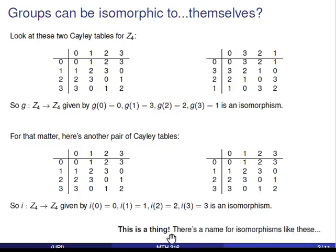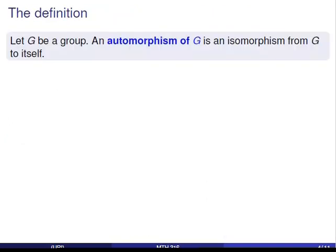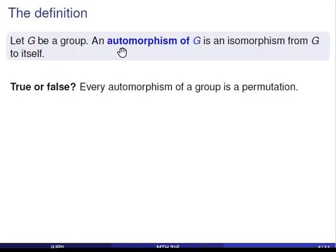It turns out that that's a thing, and that thing is what this video introduces. Our main definition in this video will be that of automorphism. Now as the 'auto' in automorphism suggests, given a group G, an automorphism of G is an isomorphism from G to itself. Now here's a question you should pause to answer: true or false, every automorphism of a group is a permutation.